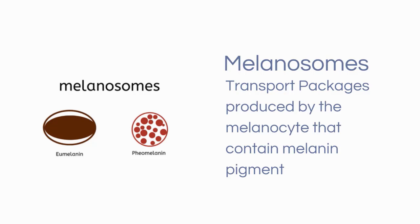There are two types of melanosomes that can be formed. This differentiation occurs based on the pathway of melanogenesis taken during formation. The first type is eumelanin — one big blob of melanin pigment surrounded by a casing or membrane. These are referred to as eumelanosomes. Eumelanin forms the brown or black pigments.